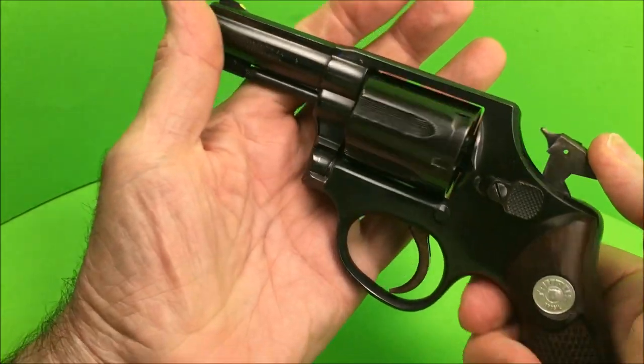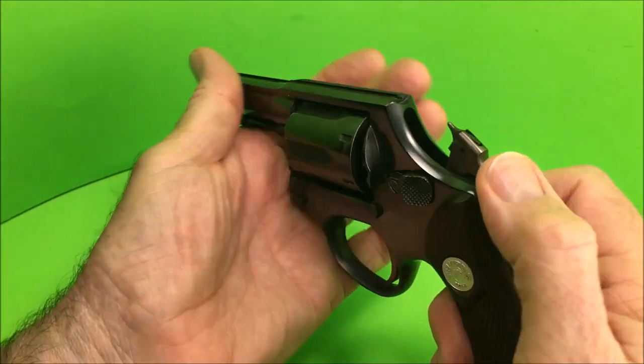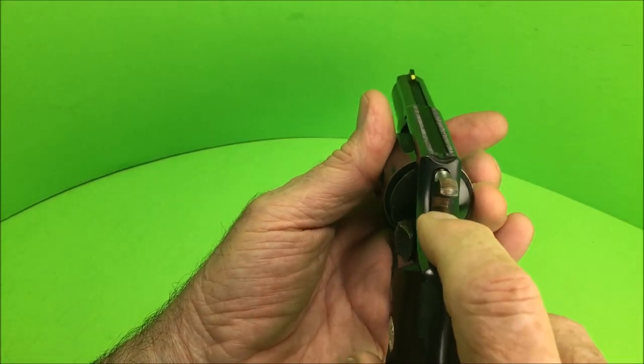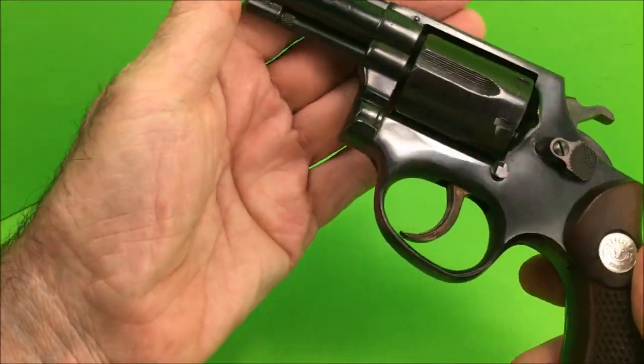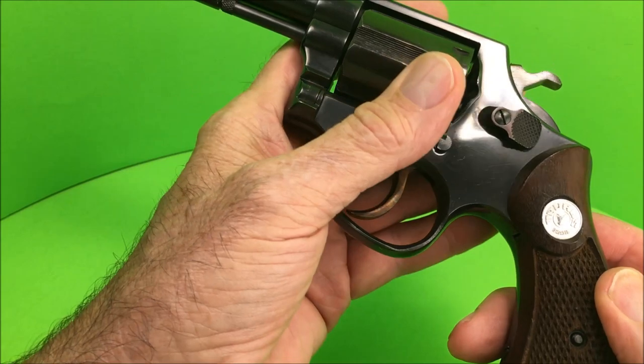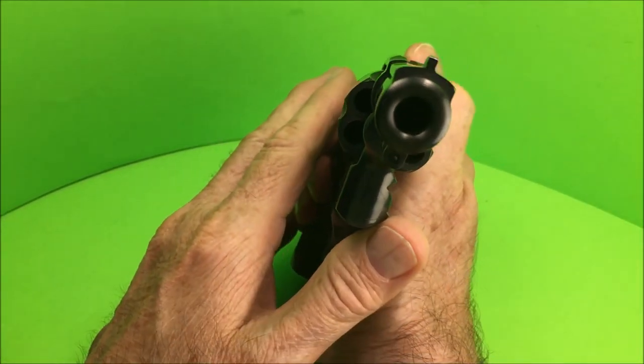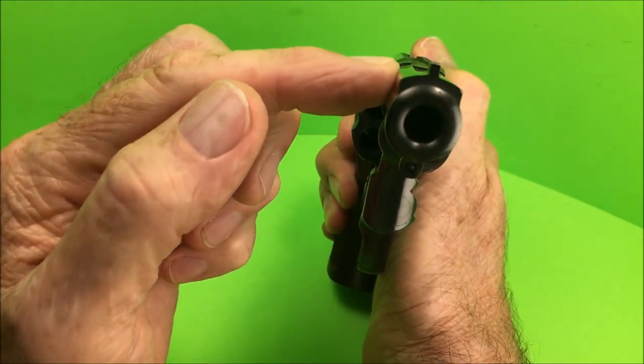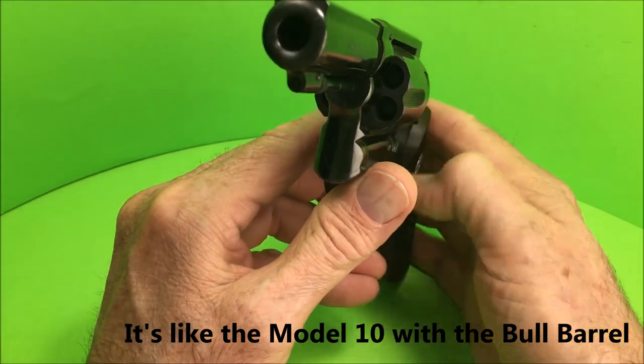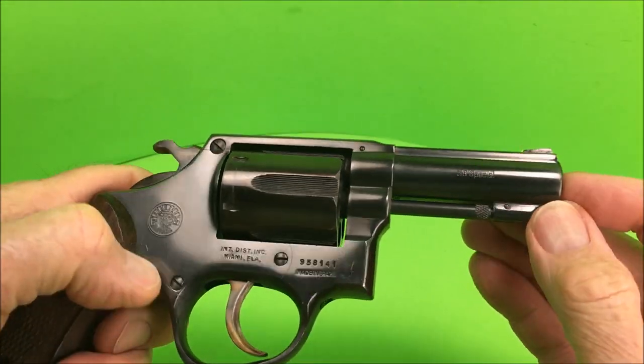This one even has the firing pin on the hammer. The new ones have got it in the frame, and the new ones have got the little key lock back here. But this is a pretty nice little revolver. You'll notice it has a pin barrel, a heavy duty barrel. It's got the ridge across the top like the model 15. This is actually more like a model 15 than it is a model 10. See there it says 38 special.